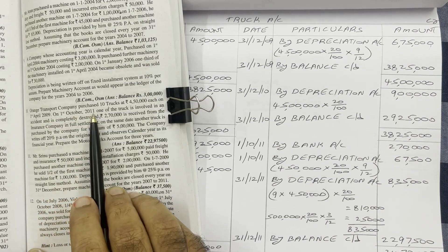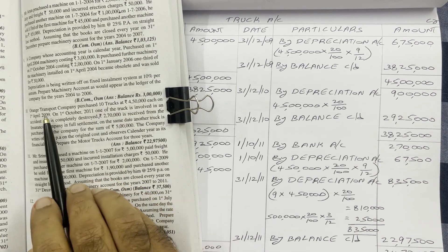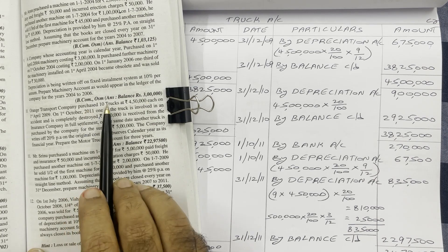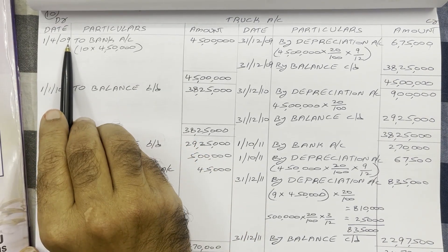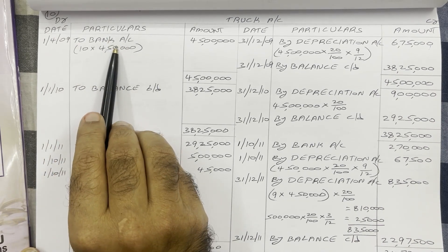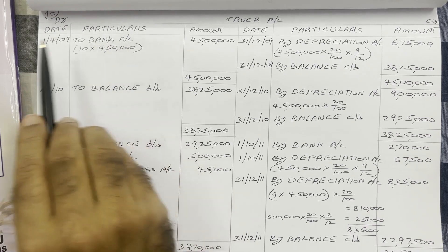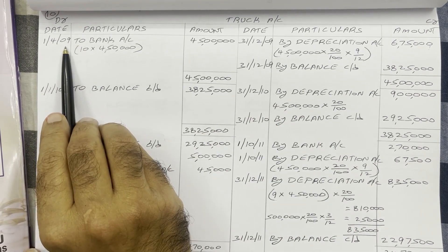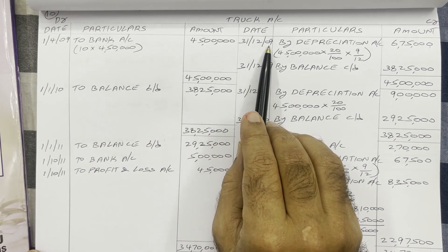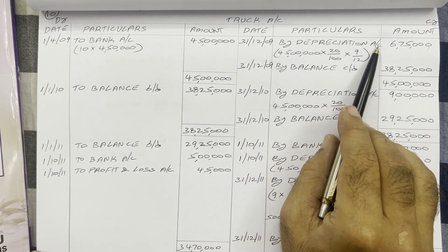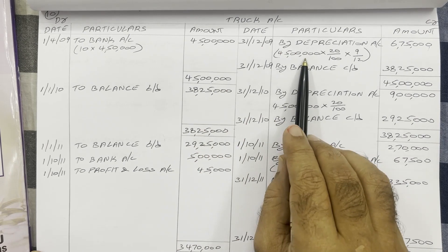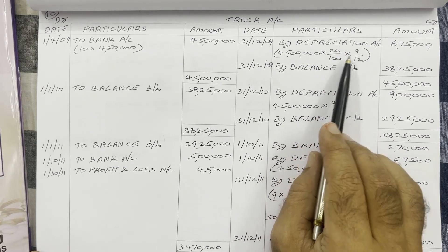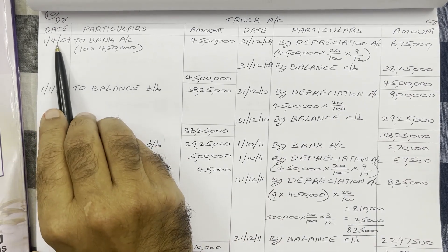On 1st October 2011, one of the trucks is involved. So after 2009, the continuation is in 2011. In 2009 and 2010, we have only these 10 trucks. The starting date in 2009 — as stated in the question, they follow the calendar year, which starts on 1st January and ends on 31st December. So the current year is 2009, and year-end is 31st December 2009. We have to provide depreciation. By depreciation account, we have these 10 trucks. 10 trucks cost Rs 45 lakh at the rate of 20% per annum.